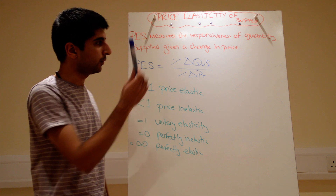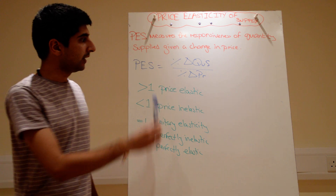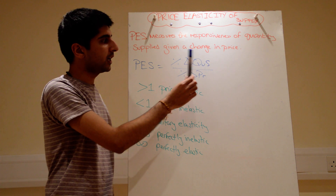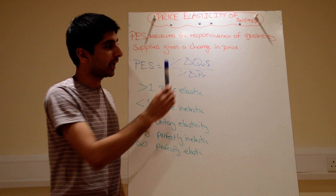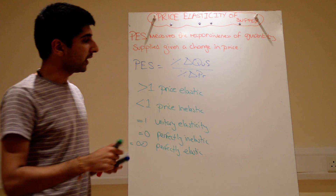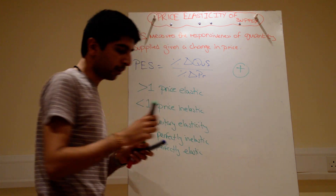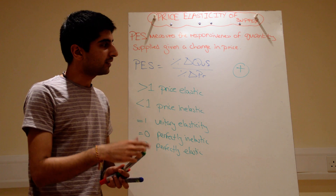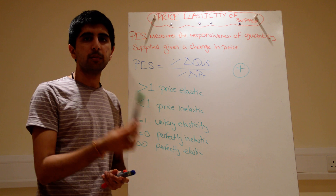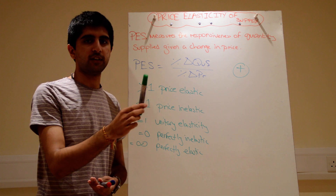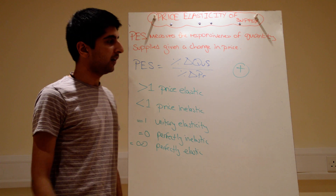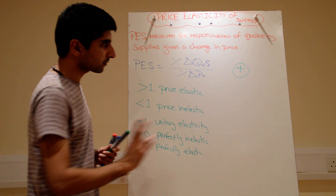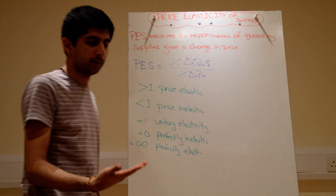Just like PED, but now using supply instead of demand, the equation is exactly the same — you just substitute supply instead of demand. So it's the percentage change in quantity supplied over the percentage change in price. We're going to get a figure, and that figure will always be positive, because the law of supply states that the relationship between quantity supplied and price must be positive — whereas with PED it was negative. So we're not worried about the sign.